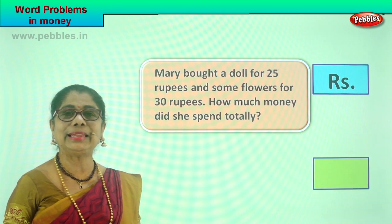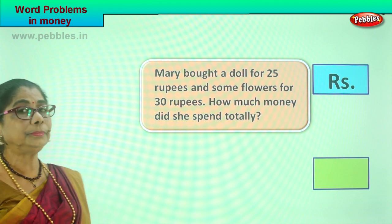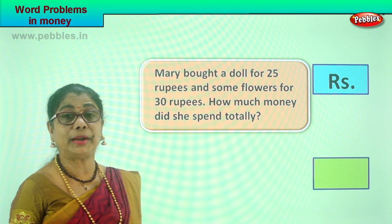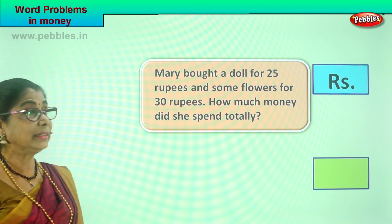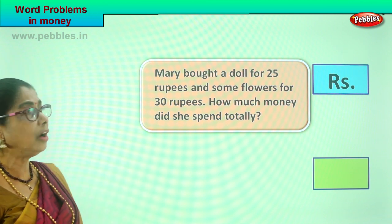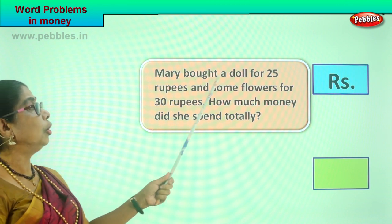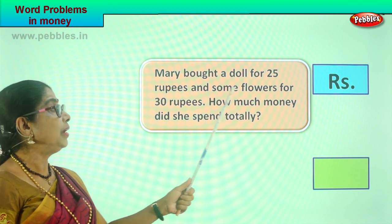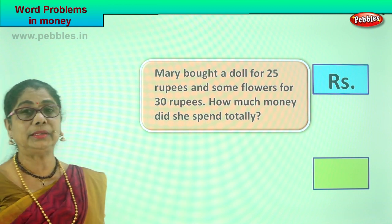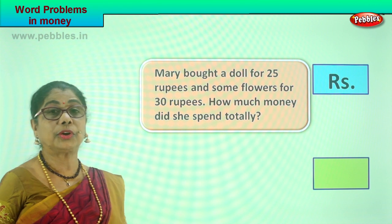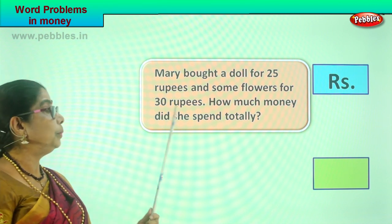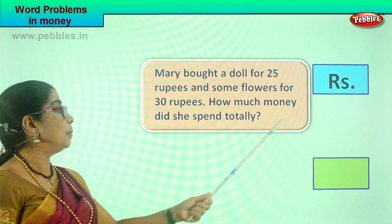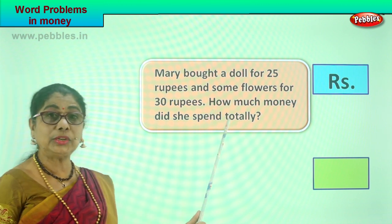Let's go more shopping — come along, let's take another problem. Who is going shopping now? Mary is shopping with her mama. Mary would like to buy some things for herself. Mary bought a doll for rupees 25 and some flowers for 30 rupees — 25 rupees for a doll and 30 rupees for some flowers. The question is: how much money did she spend totally?